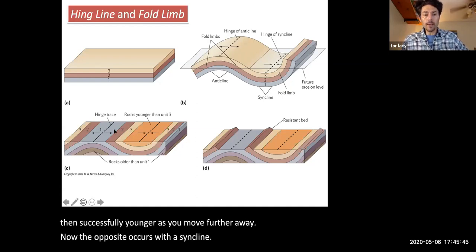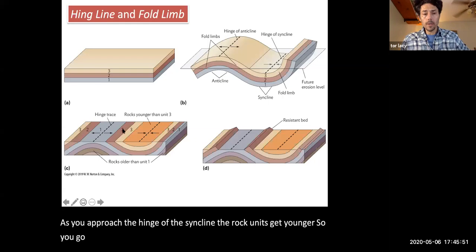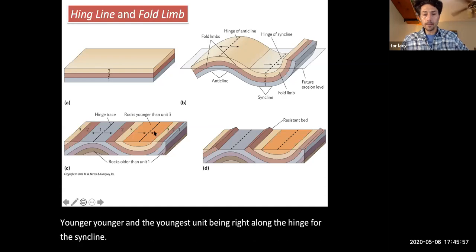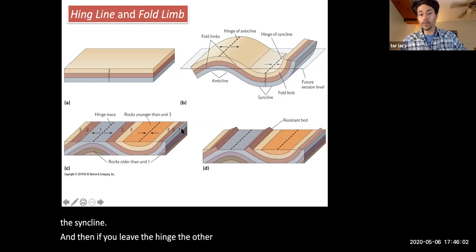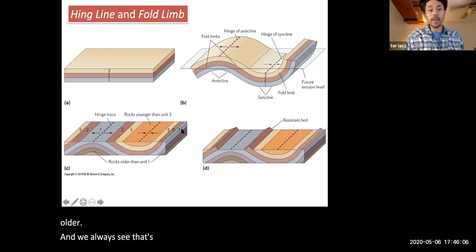Now the opposite occurs with the syncline. As you approach the hinge of the syncline, the rock units get younger. So you go from older, younger, younger, and the youngest unit being right along the hinge for the syncline. And then as you leave the hinge the other direction, the rock units get older. And we always see that's the case for eroded anticlines and synclines.